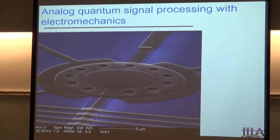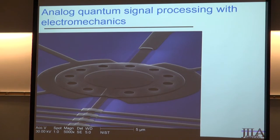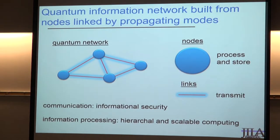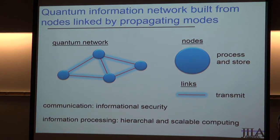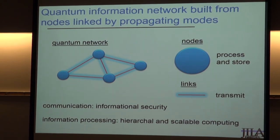The message of this talk is that in many situations you might really prefer to do signal processing at least partially in the mechanical domain using micro-electromechanical systems, like the system shown in the background of the slide. The kind of analog signal processing functions I'm imagining are the things you might want to do to build a quantum network — a network of nodes that process and store information, and links that transmit that information over some distance.